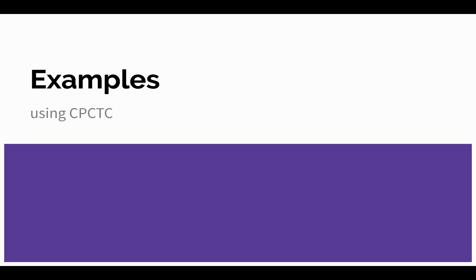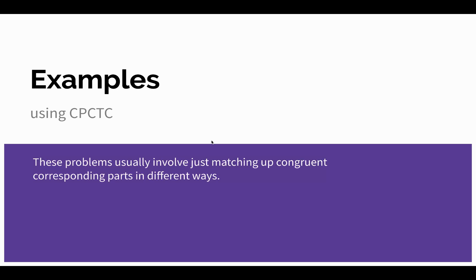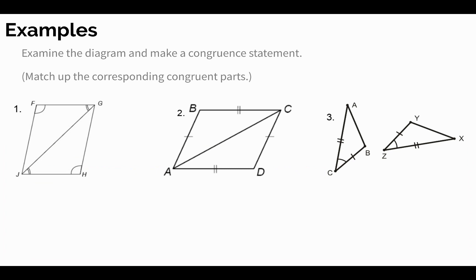So how do we use examples? There's quite a variety of types of problems you're going to be asked with CPCTC. But all of the problems, no matter how they phrase the question, really want you to match up all the congruent corresponding parts. Basically, all you're doing is matching up the corresponding congruent parts of two polygons. The instructions say: examine the diagram and make a congruence statement. Go ahead and pause the video and write down your answers.